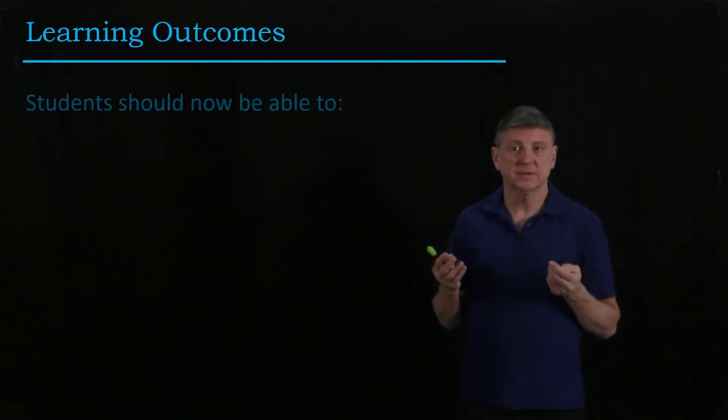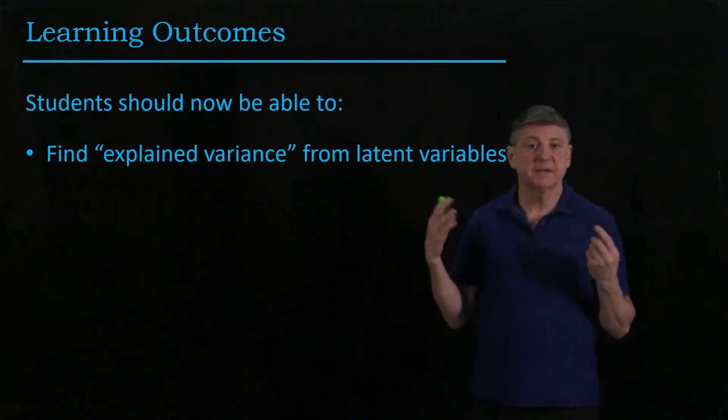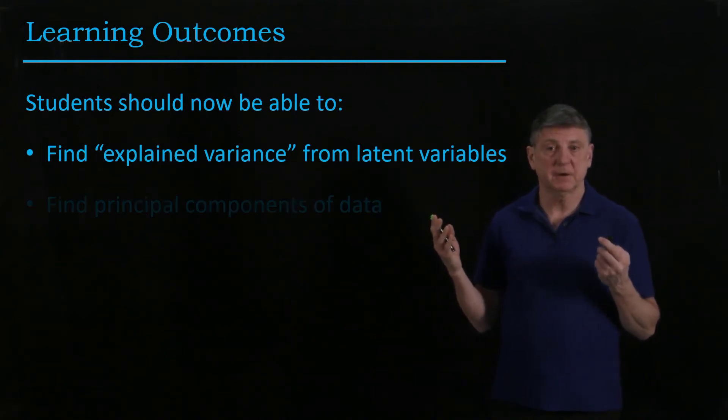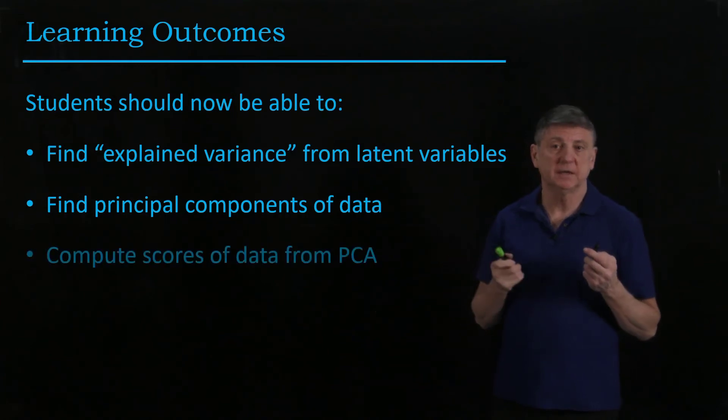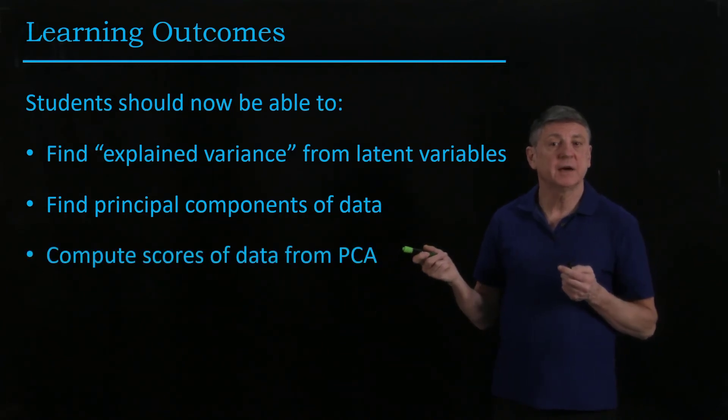So what have we learned in this lecture? We're now able to find explained variance by using latent variables. We can find the principal component or components of our data. And we now understand how to compute scores of data using principal components analysis.